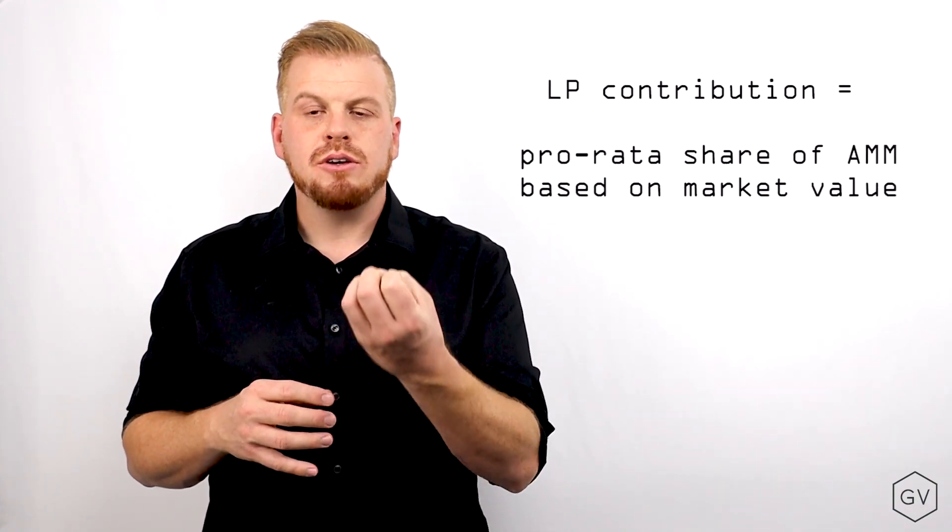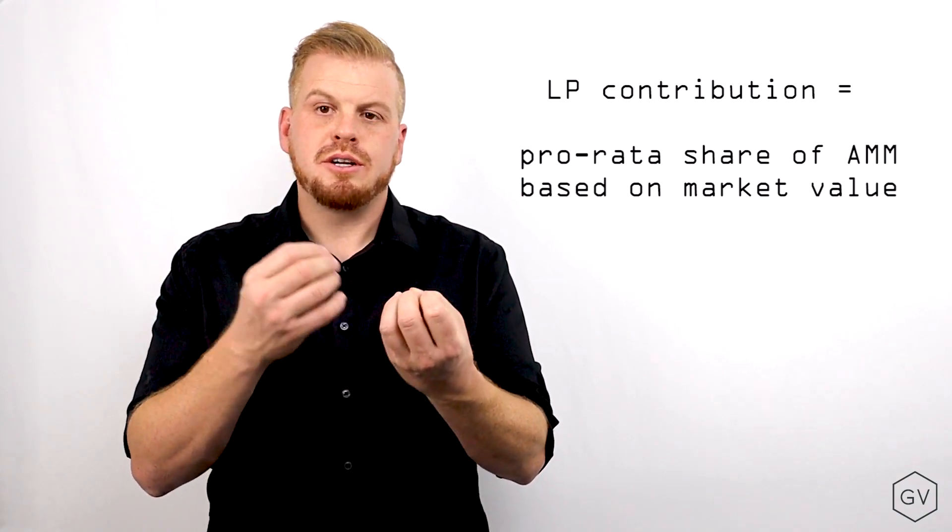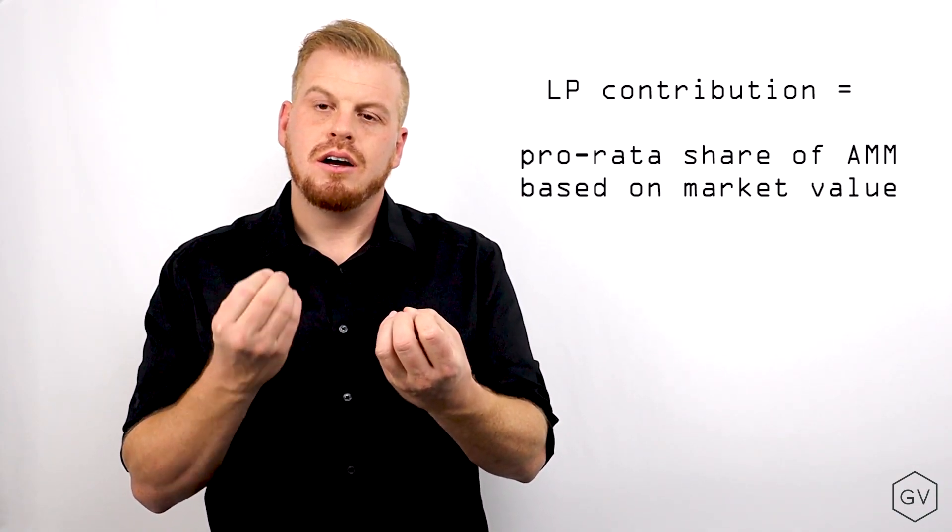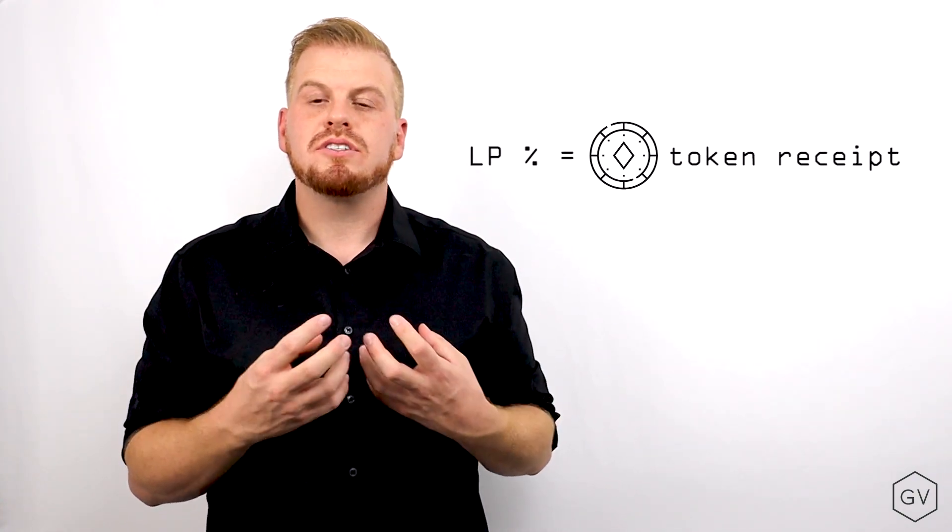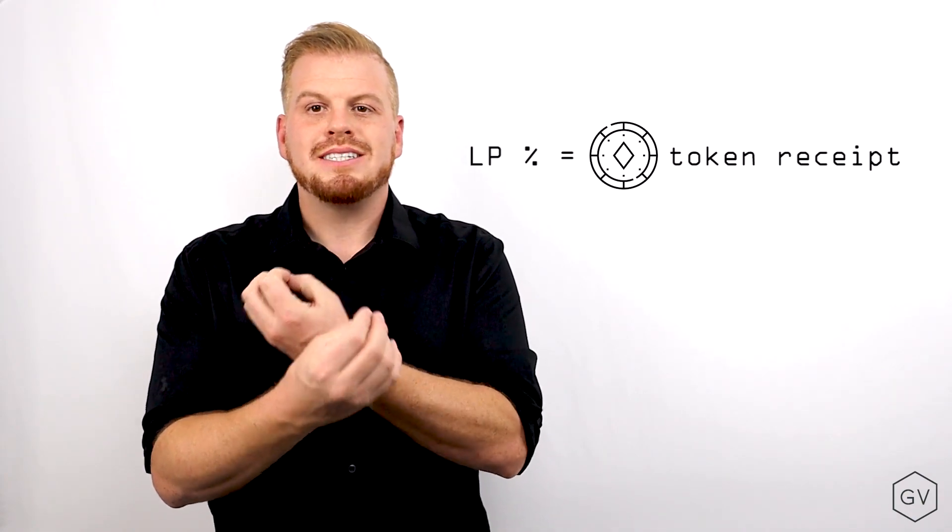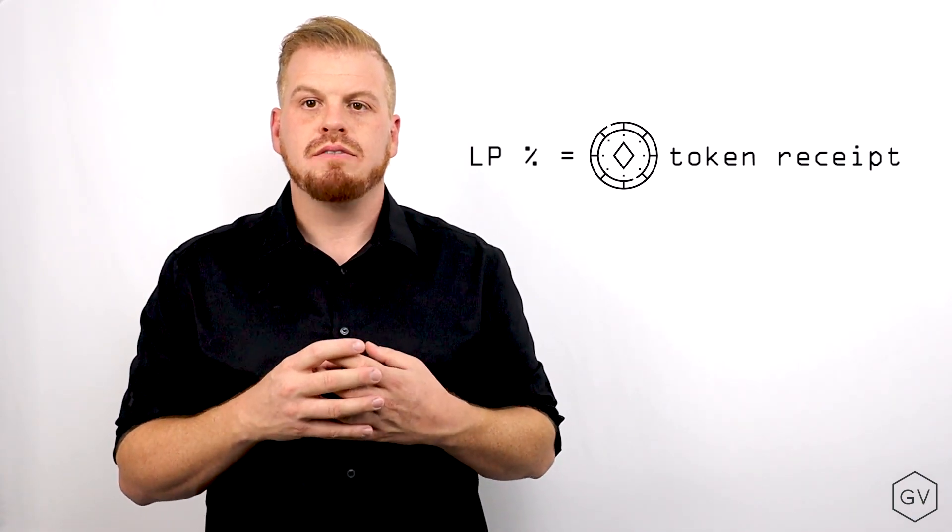Lastly, when an LP provides liquidity to an AMM, the market value of the AMM will determine the pro rata share of the LP's contribution. The LP will then receive a receipt in the form of a token that represents the direct pro rata portion of the pool.